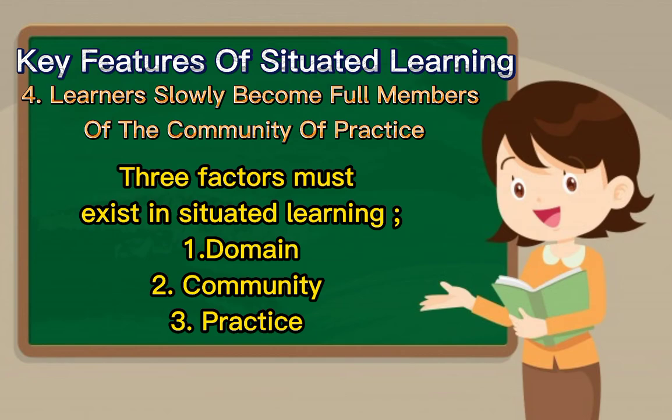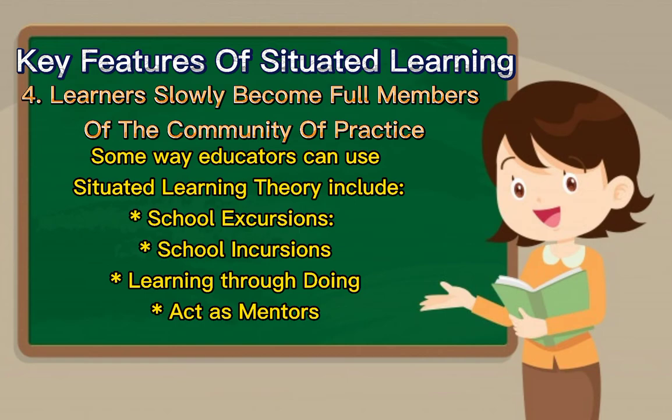Some ways educators can use situated learning theory include: first, encouraging students to take internship or mentorship roles in the local community — students should be given opportunities to shadow practitioners as they complete their daily tasks. Second, school excursions — having community members come into the classroom to share how they do things and vocabulary from their profession.